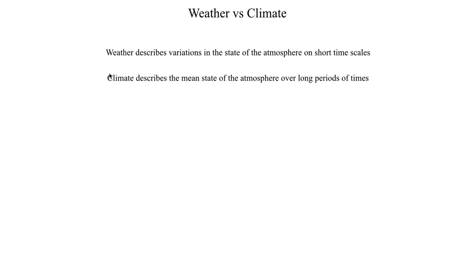Just to recap what we talked about in the first segment: we introduced the definitions of weather and climate. Weather describes short-term variations in the state of the atmosphere or in some physical parameter or measured value, whereas climate describes a mean state taken of a particular parameter or measured value over a period of several decades, or sometimes even centuries or longer timescales.